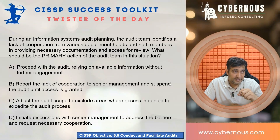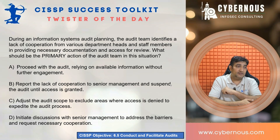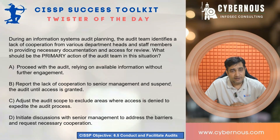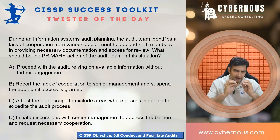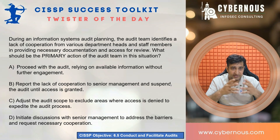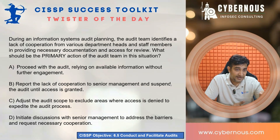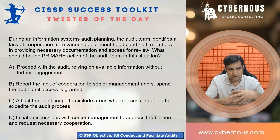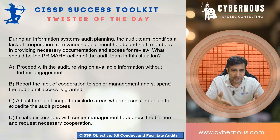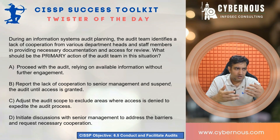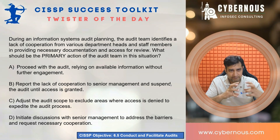Option B says: report the lack of cooperation to senior management and suspend the audit until access is granted. This looks very likely, but reporting the lack of cooperation gives a kind of negative feel. If the team doesn't help you overall, you are left with no choice other than telling senior management. However, the second portion says 'suspend the audit,' and suspending the audit may be against the audit planning. You have already invested effort — it might be a third-party or internal audit — and suspending just because of non-cooperation may not be a great thing to do.